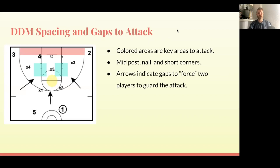Let's take a peek at how your DDM spacing can be used to attack the gaps. The colored areas are the key areas to attack. Simple basic zone principles — nothing different with your dribble drive. You want to attack the baseline, the short corners, the mid-post area, the low-post area, and the nail area. The arrows indicate your gaps. You want to force two players to guard this attack, so if you're driving, someone's going behind you just like normal dribble drive.